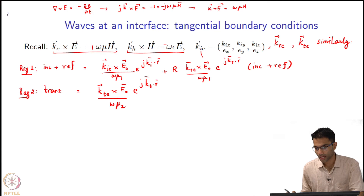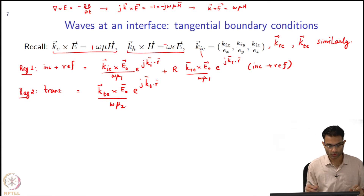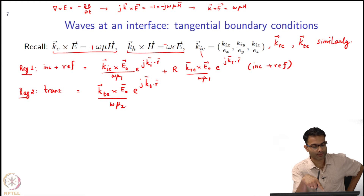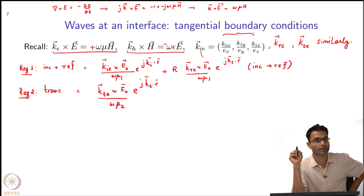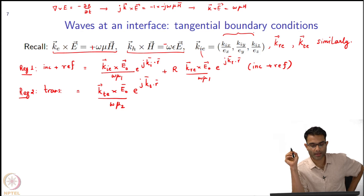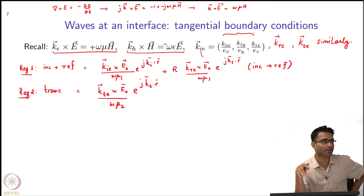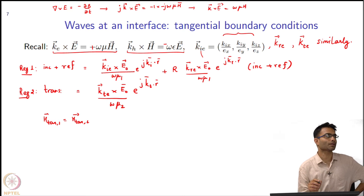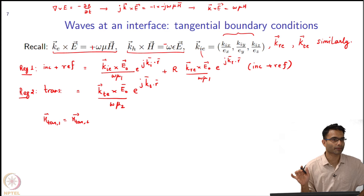In region 2: k_te cross E_naught times e to the j k_t dot r, divided by omega mu_2 — because region 1 and region 2 may have different epsilon and mu. Now I have everything. I need to take the cross product vector: k in general has 3 components and my E has x and y components. To enforce h_tan in region 1 equals h_tan in region 2, I should drop the z part — that will give me the tangential field continuity.